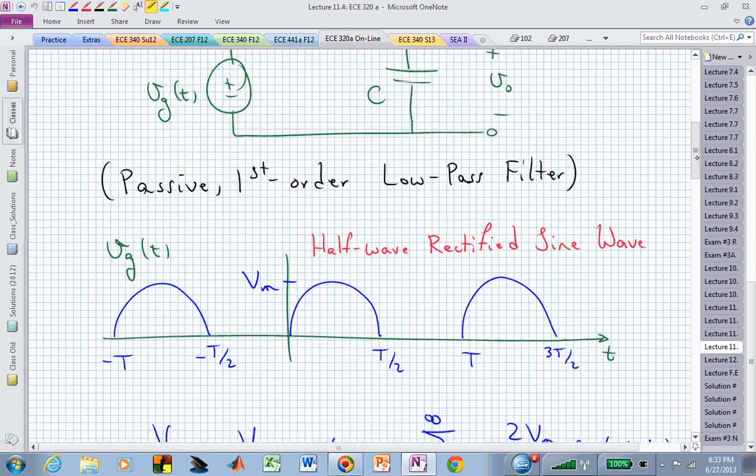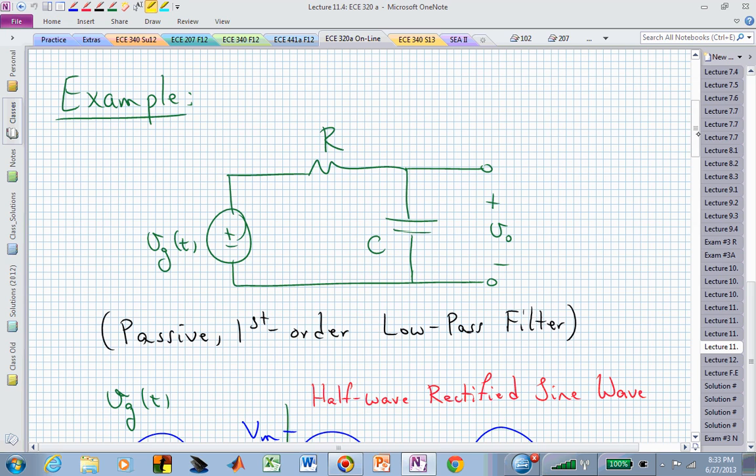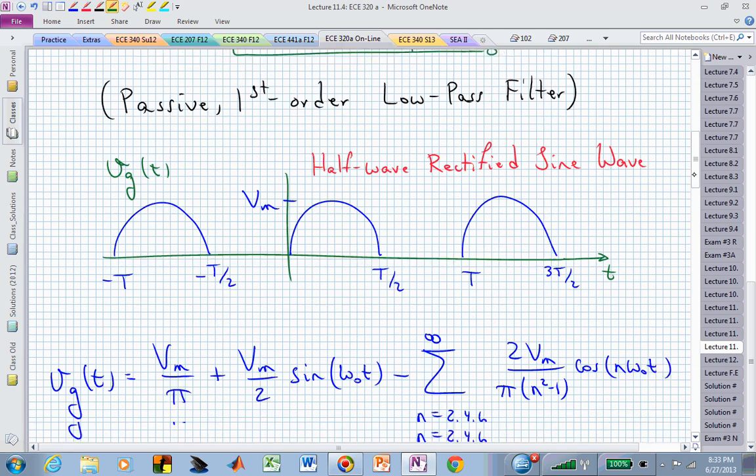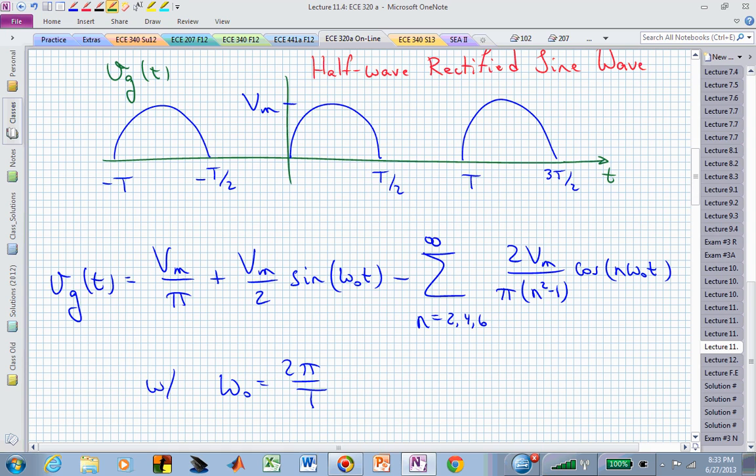In order to analyze this problem, or what does the output V sub 0 of T look like when we apply to that system V sub G of T, where V sub G of T is this half-wave rectified sine wave, I hope what you're starting to see is,